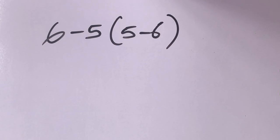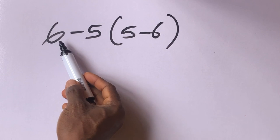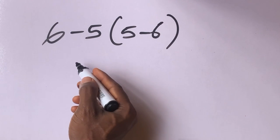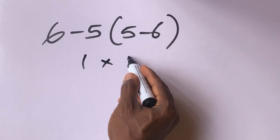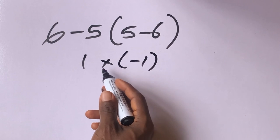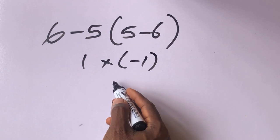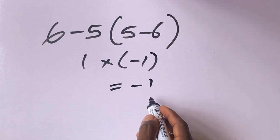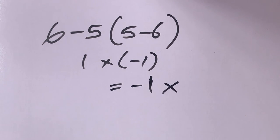Hi guys, welcome back to my channel. When you have a simple math problem like this, many people solve it wrongly. For example, 6 minus 5 will give us 1, times 5 minus 6 will give us minus 1, then minus 1 times 1 times minus 1 is equal to minus 1. But this answer is not correct.